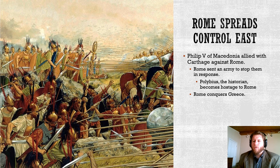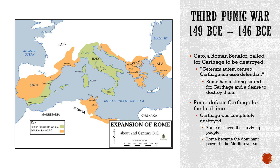The third and final Punic War comes almost 50 years later. At the time this war starts, Carthage is pretty much nothing — really just the territory right around the city of Carthage itself. There's a Roman senator, a guy by the name of Cato, who really distrusts the Carthaginians. He believes that Carthage needs to be taken care of once and for all, and the Roman people for the most part agreed — they had a pretty strong hatred for Carthage and most people wanted to see this longtime enemy dealt with.